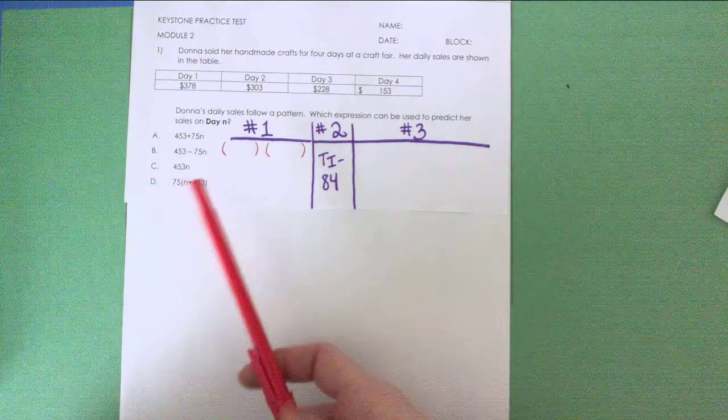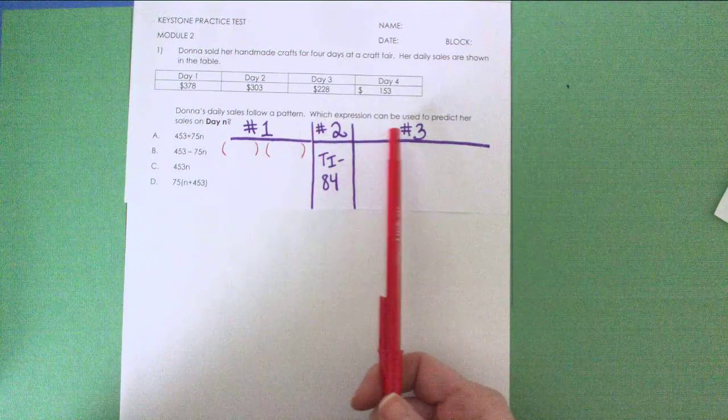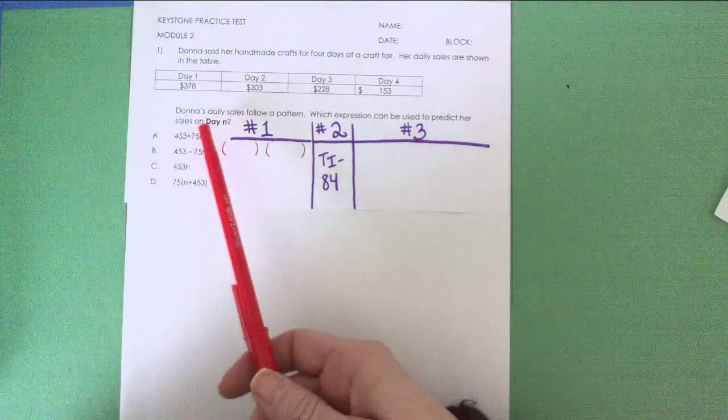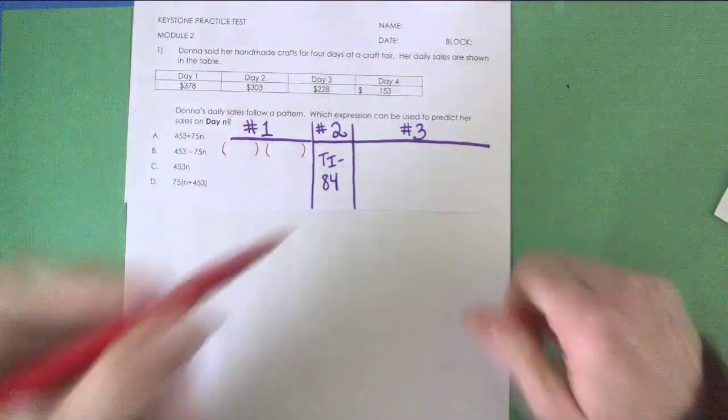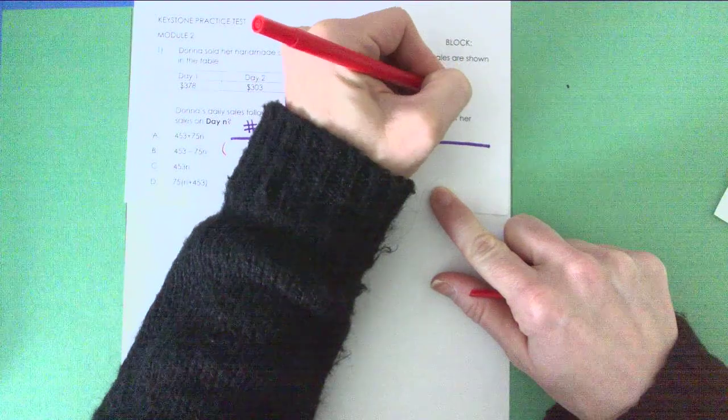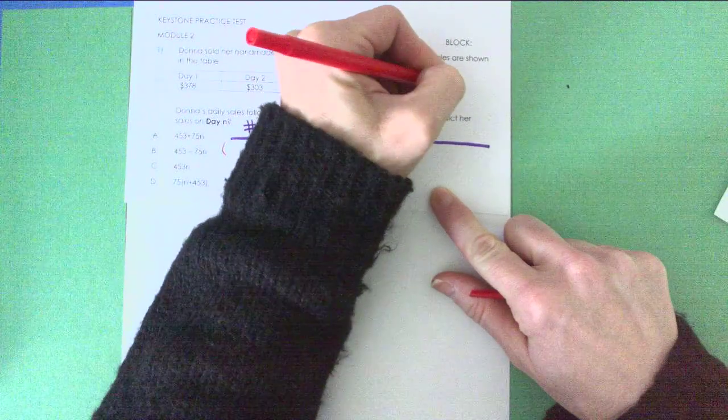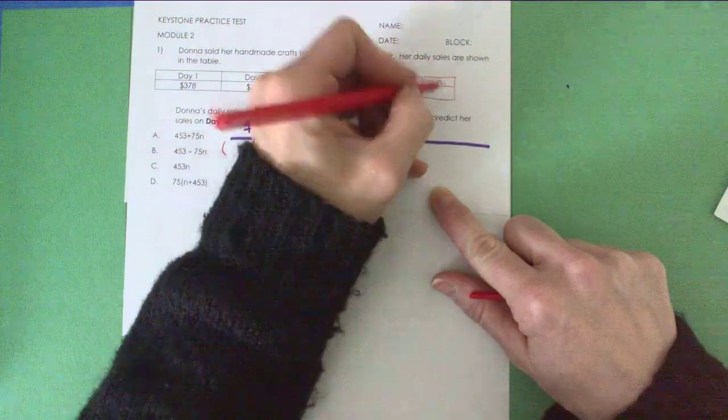The question was, Donna's daily sales follow a pattern. Which expression can be used to predict her sales on any day? Let's call it day N. So really, we want to be able to extend this table and find her sales on any generic day N. What are the sales?